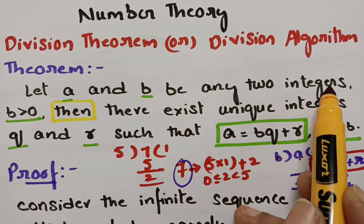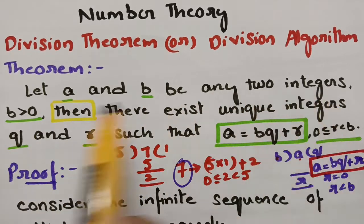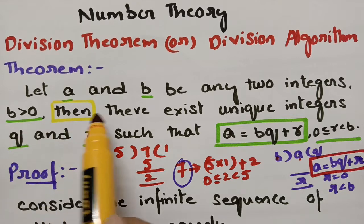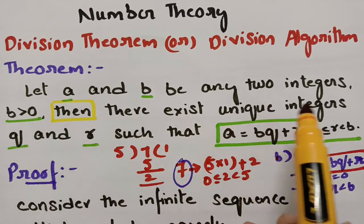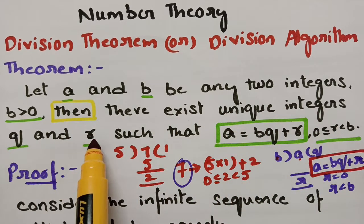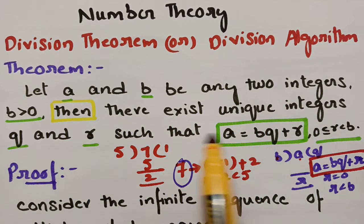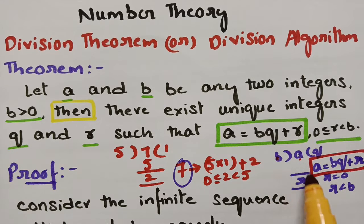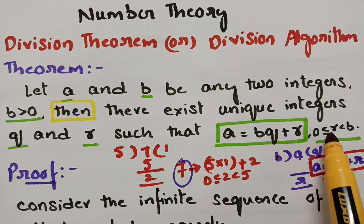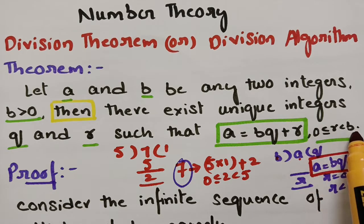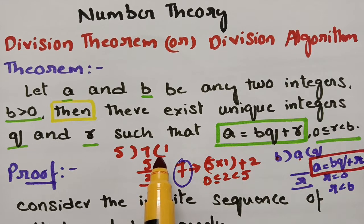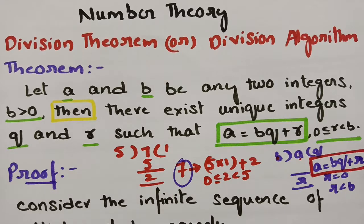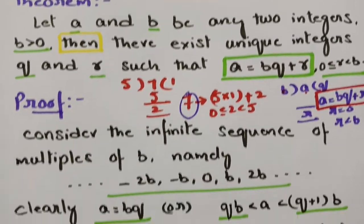So to recap: let a and b be any two integers and b should be positive. Then there exist unique integers q and r such that a = bq + r, where 0 ≤ r < b. So you understand this division algorithm. Next, let's look at the proof.